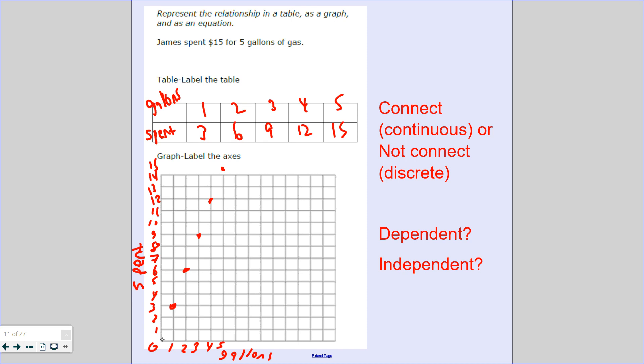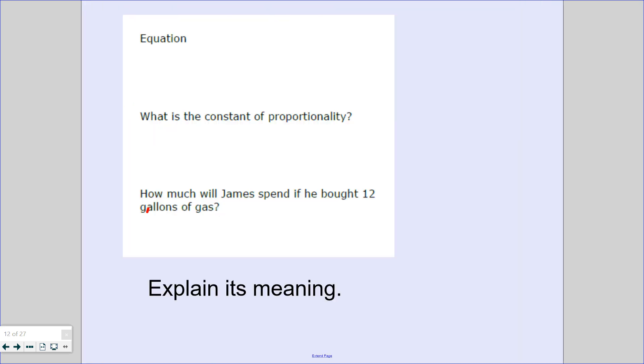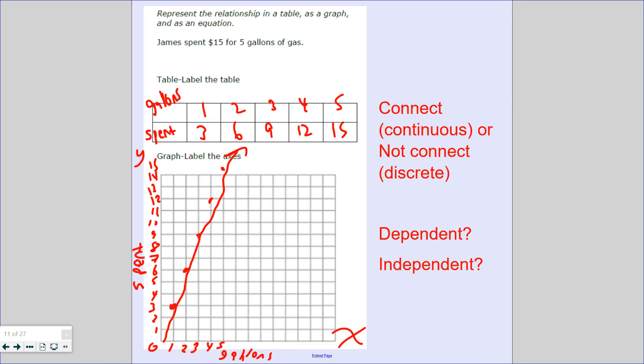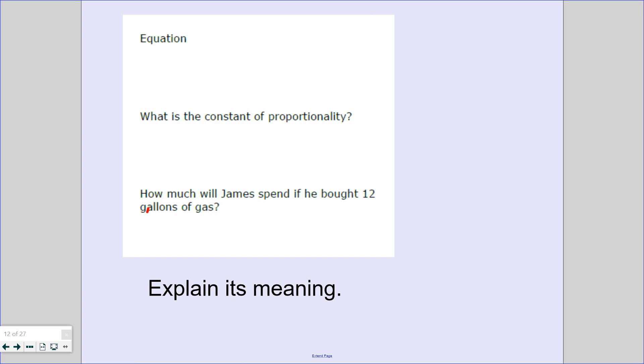So is this continuous or not? It is continuous. Can you buy a fraction of a gallon of gas? Yes, you can. So what was the dependent? The dependent is spent, because the amount spent depends on the gallons of gas. This is the x-axis and this is the y-axis. So what is our equation? What's the relationship here? The relationship is times 3. So how would you write an equation in the form of y equals? y equals 3 times the number of gallons of gas, or y equals 3x.